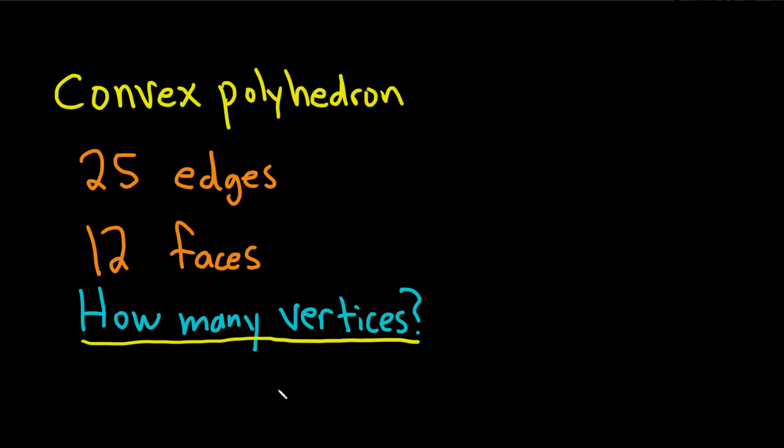To do this we're going to simply use Euler's formula for convex polyhedra, which basically says V, which is the vertices, minus E, which is the edges, plus F, which is the faces, is equal to 2.